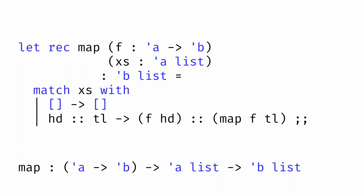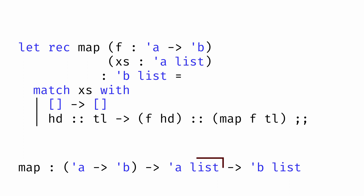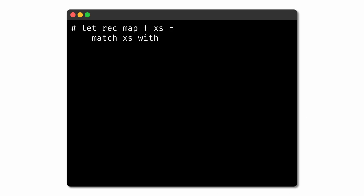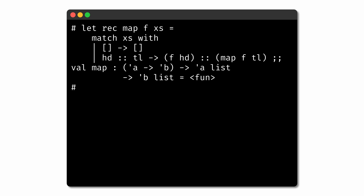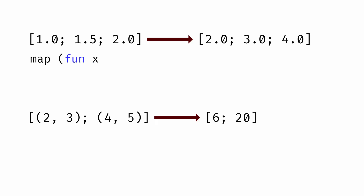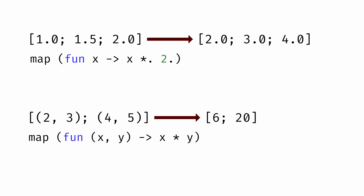For any types alpha and beta, this function accepts a function that maps values of type alpha to values of type beta, and then accepts a list with values of type alpha. The alpha to beta function is applied to each of the values of type alpha, to return a new list with values of type beta. It turns out that even without the explicit type annotation, OCaml's type inference system can infer these constraints automatically. But adding type annotations helps us to make our intentions clear. Using this new map abstraction, we can write functions to map floating point numbers to floating point numbers, or pairs of integers to integers, or any other choice for types alpha and beta. We could similarly try to write polymorphic versions of other higher order functions we've seen, like fold and filter.